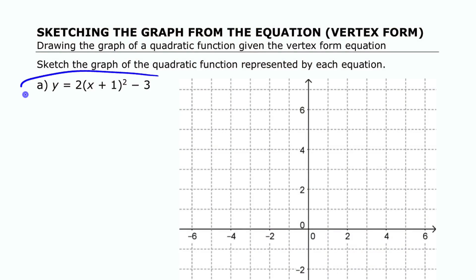To sketch the graph of a function that's given in vertex form like that, we need to think about the values of the various parameters here, and often they're called a, h, and k.